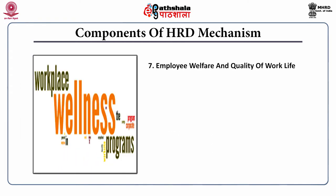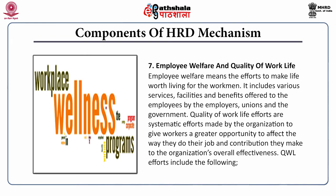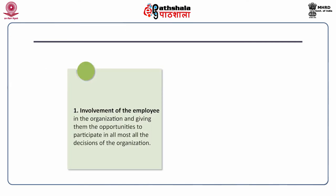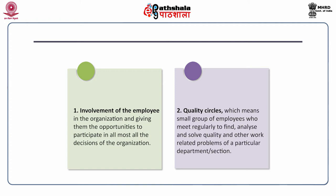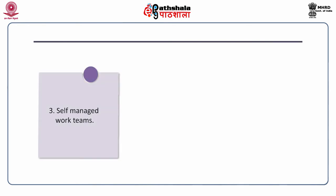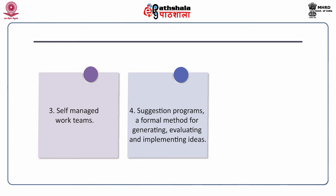The seventh component is employee welfare and quality of work life. Employee welfare means the effort to make life worth living for workmen, including various services, facilities and benefits offered by employers, unions and the government. Quality of work life efforts are systematic efforts made by organisations to give workers greater opportunity to affect the way they do their job and the contribution they make to the organisation's overall effectiveness. QWL efforts include: involvement of employees in organisational decisions; quality circles — small groups of employees who meet regularly to find, analyse and solve quality and work-related problems; self-management work teams; suggestion programmes — a formal method for generating, evaluating and implementing ideas; and open door policies.